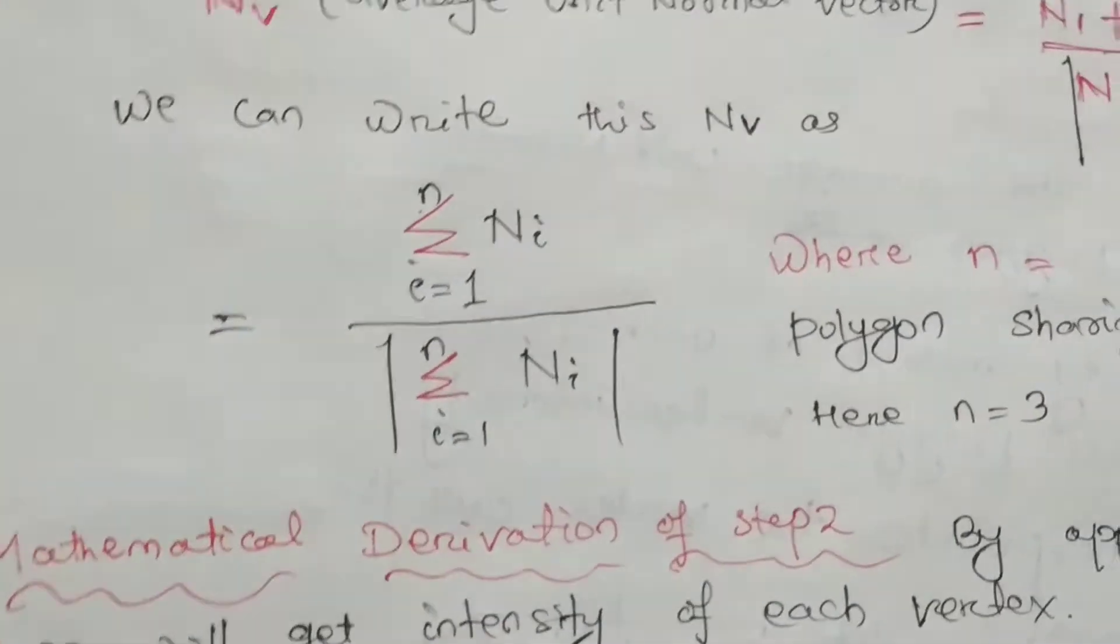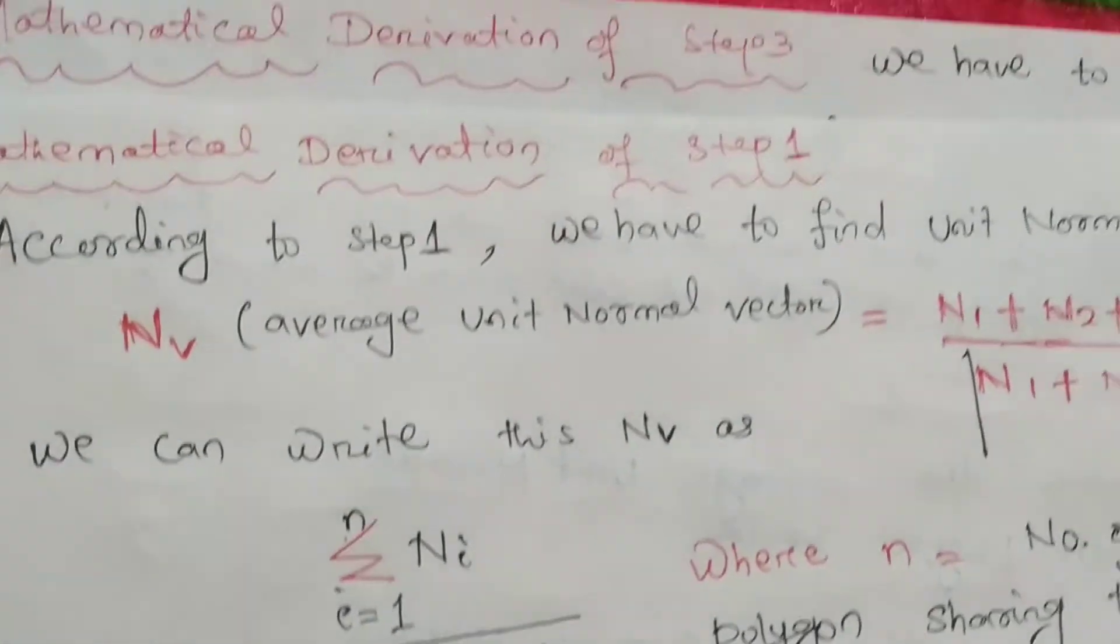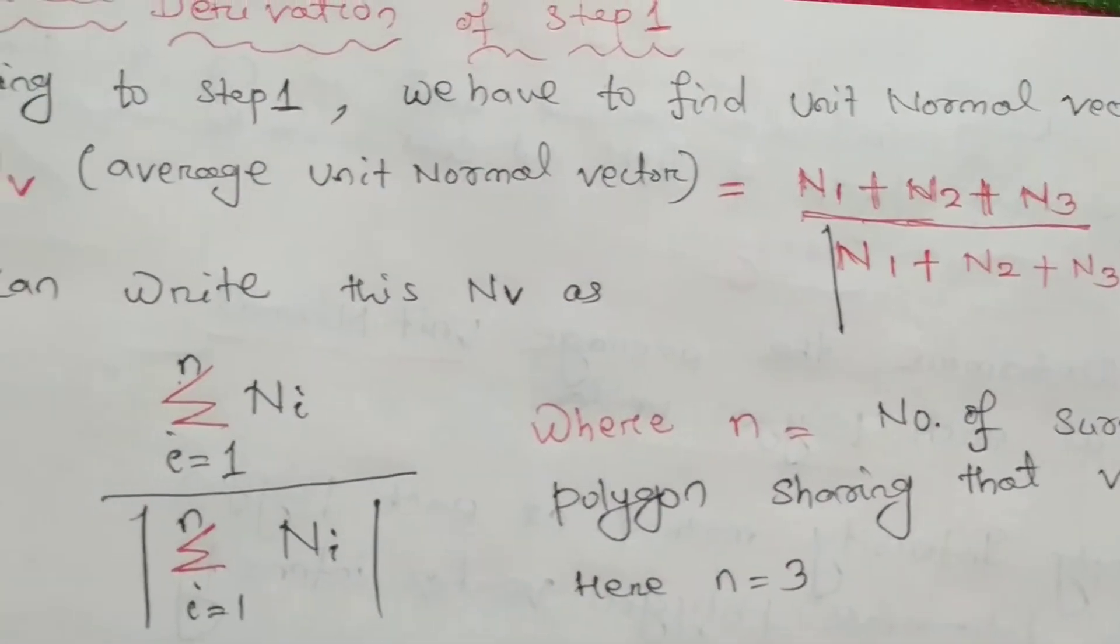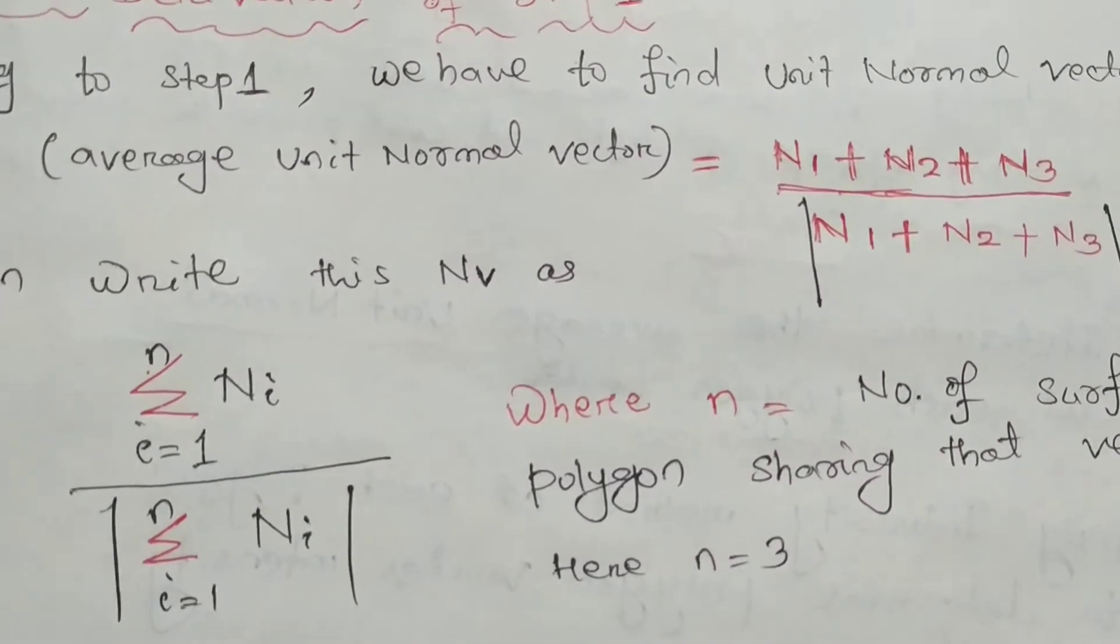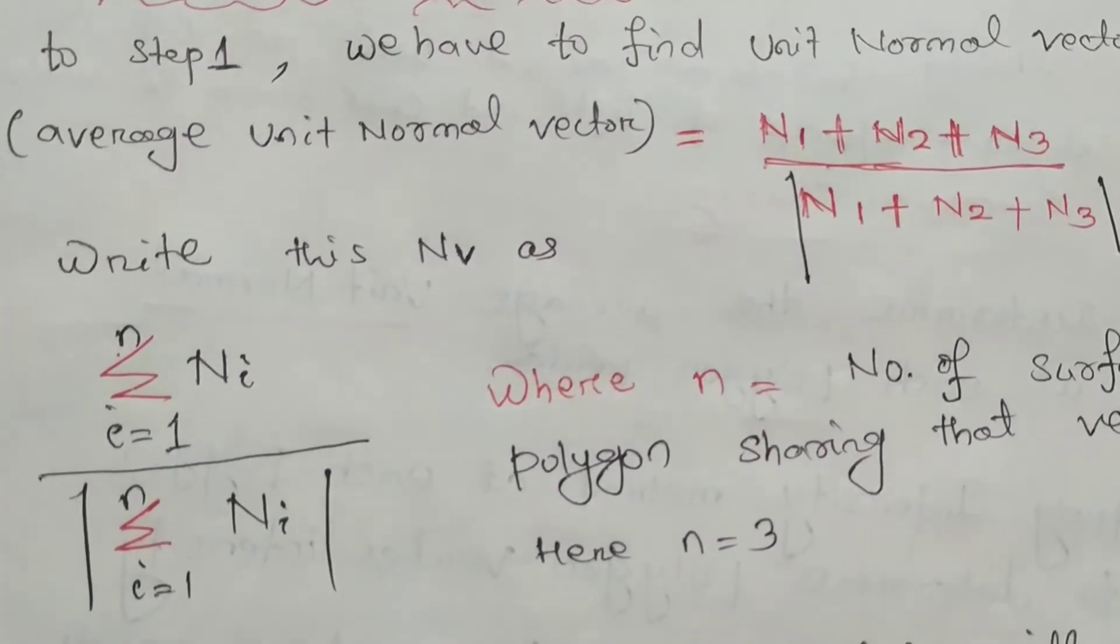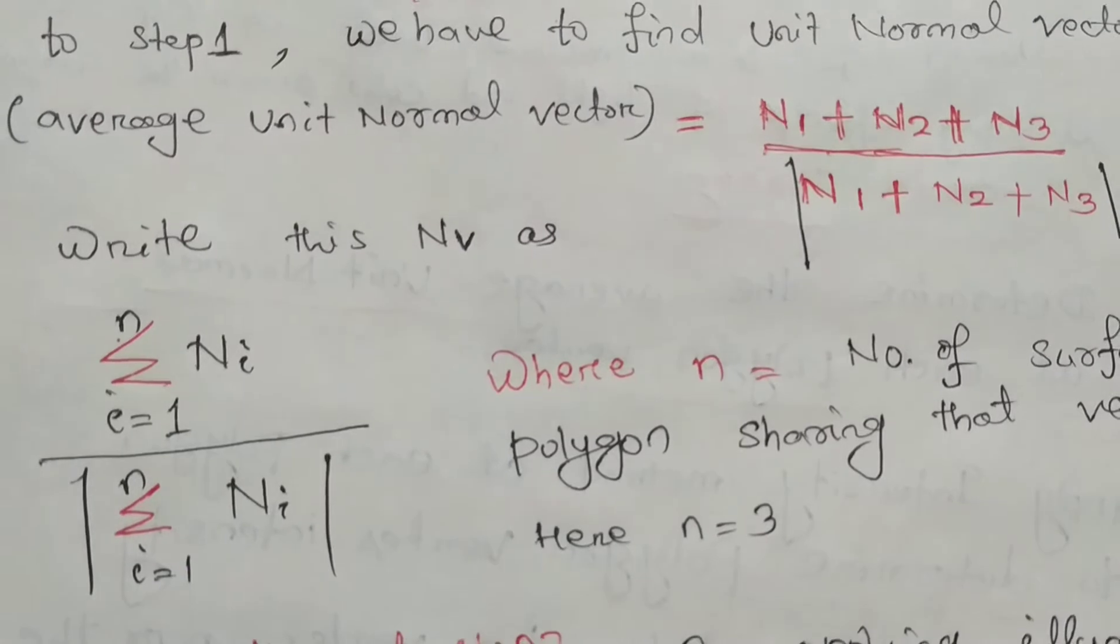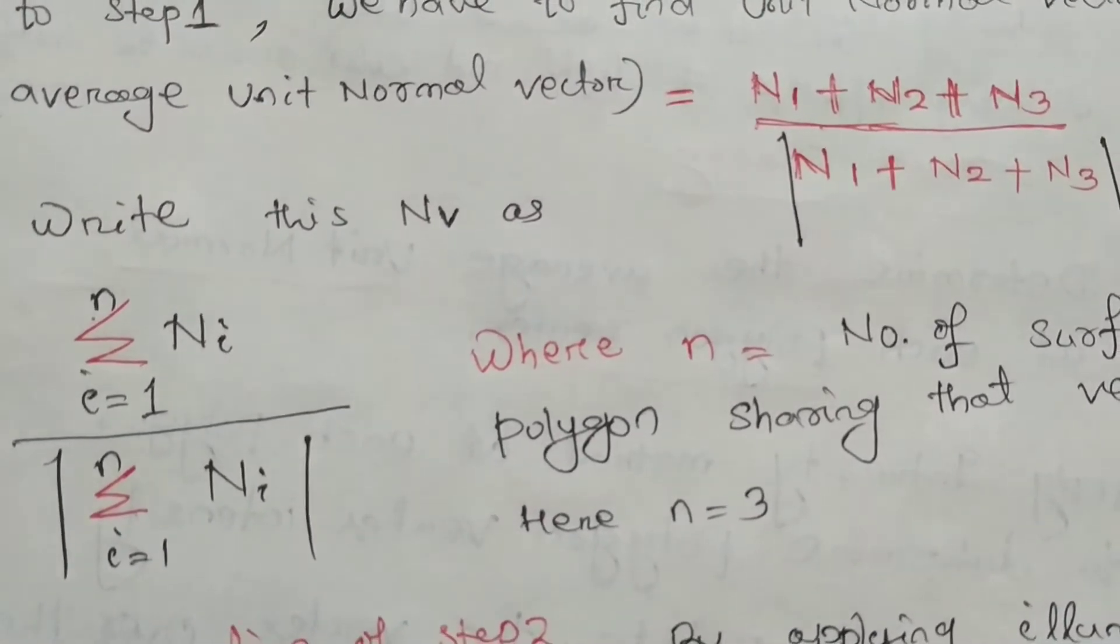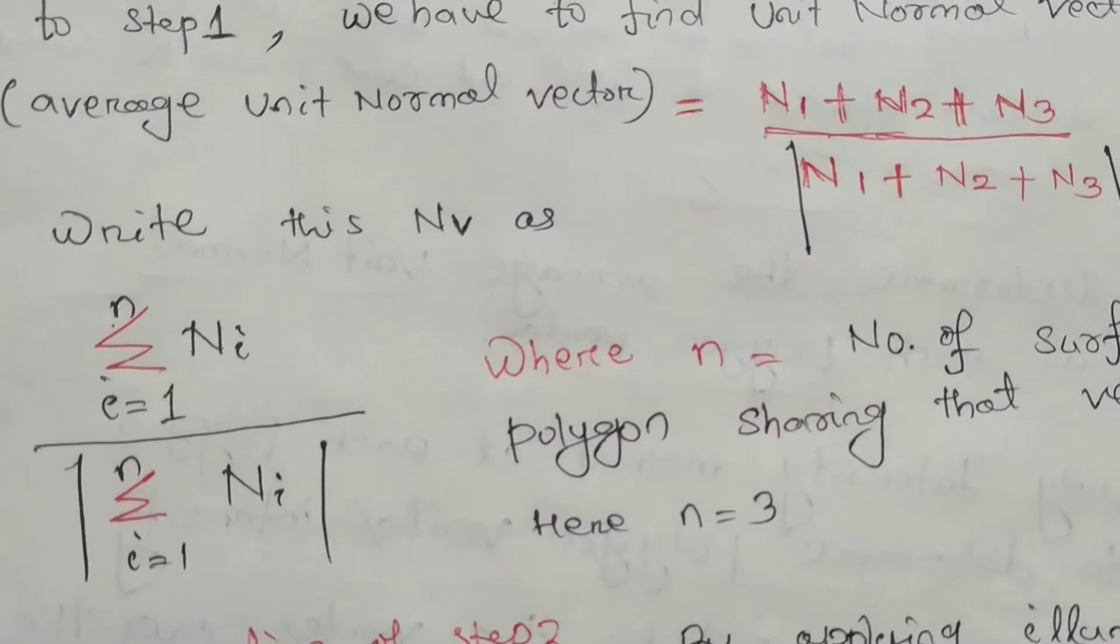We will discuss the mathematical derivation of step 1. According to step 1, we have to find the unit normal vector NV, the average unit normal vector. That is N1 plus N2 plus N3 divided by the magnitude of N1 plus N2 plus N3. Because there are three normals sharing the vertex V, we can write it this way.